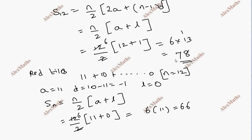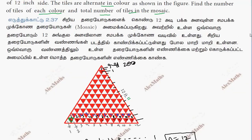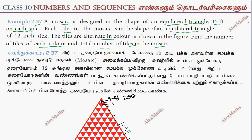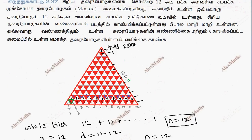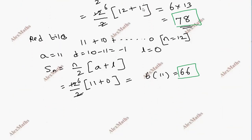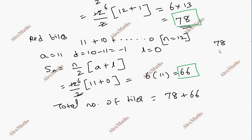Number of white tiles = 78, number of red tiles = 66. Find the number of tiles of each color and total number of tiles. Total number of tiles = 78 plus 66 = 144.